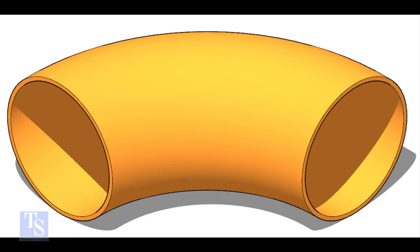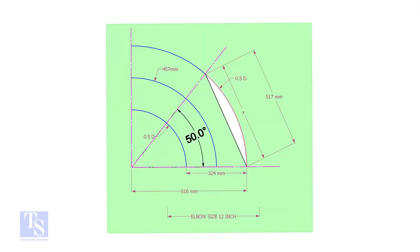This is a 12-inch long radius elbow. Let us mark a 50-degree elbow on it. Let us draw a simple layout of the elbow.